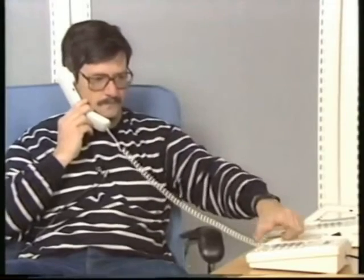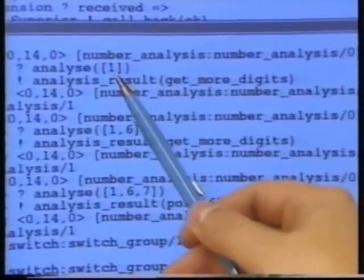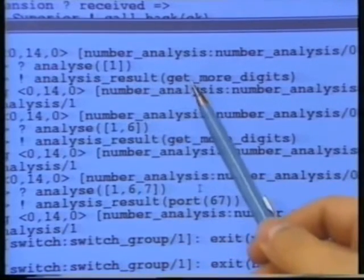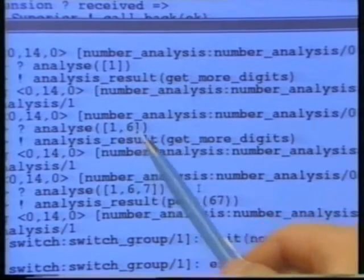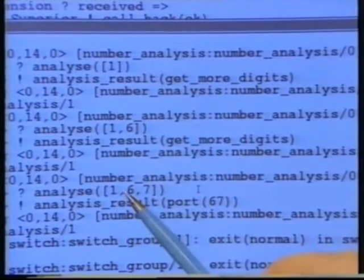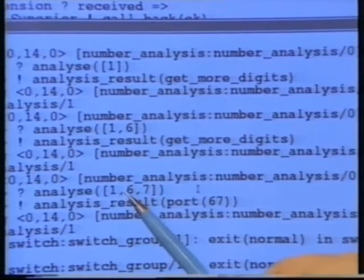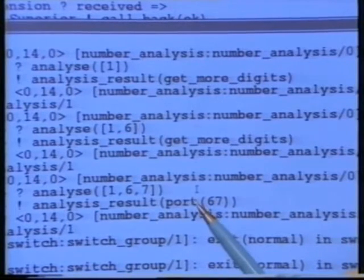I'll dial one, six, seven. What we see here is a symbolic trace of the communications to and from the number analyzer. It first received the message 'analyze one' and returned the result 'get more digits.' It then received the request to analyze the digits one, six, and again returned 'get more digits.' And lastly, it received one, six, seven, and returned port 67, which signifies the hardware address of a telephone.